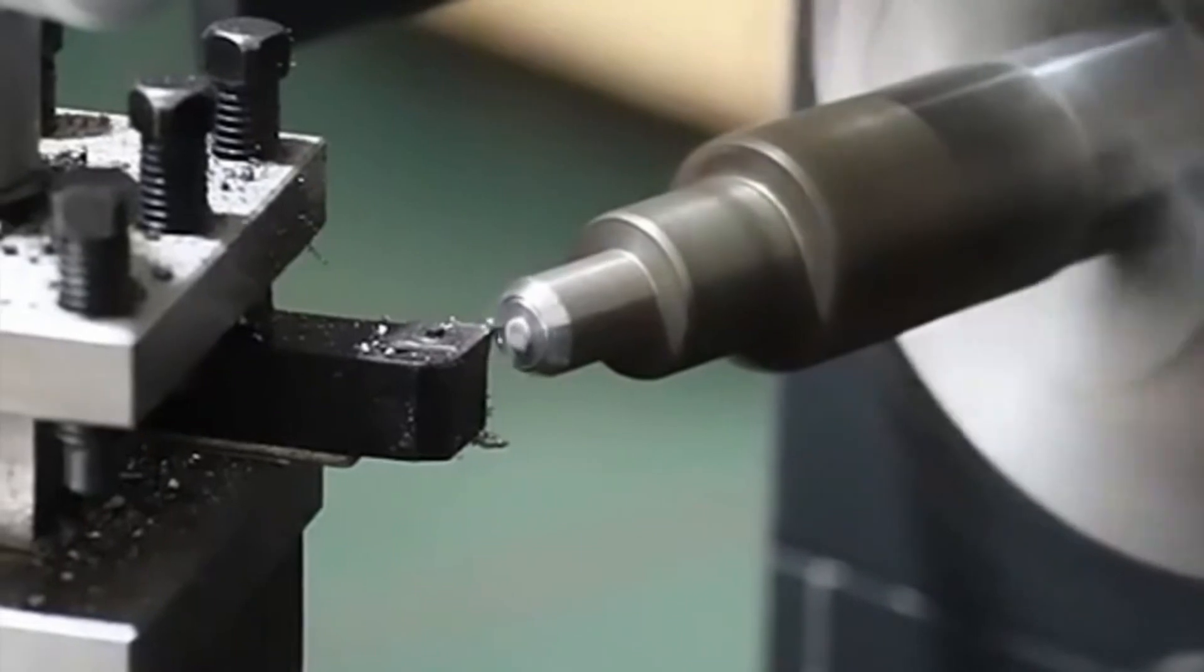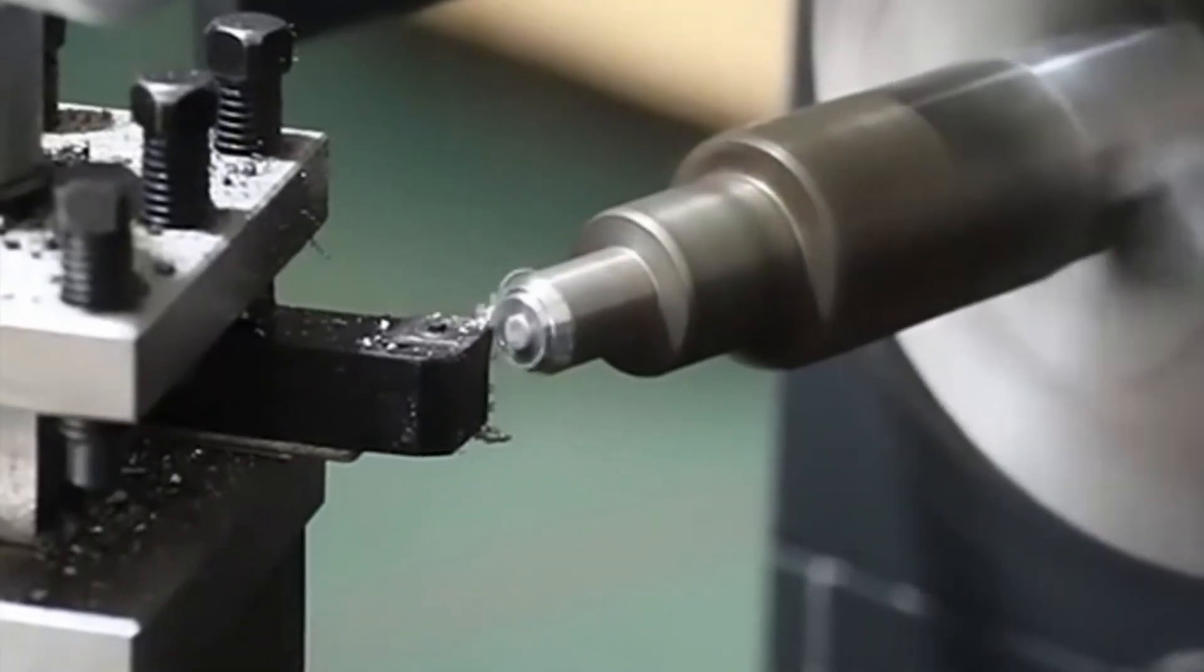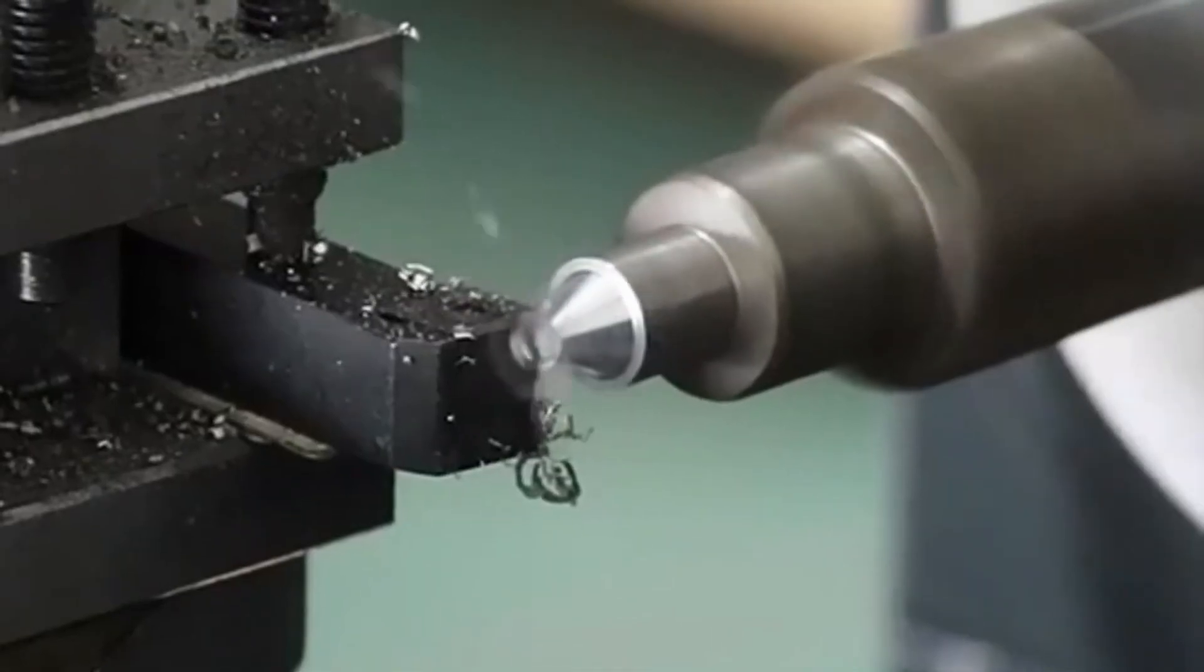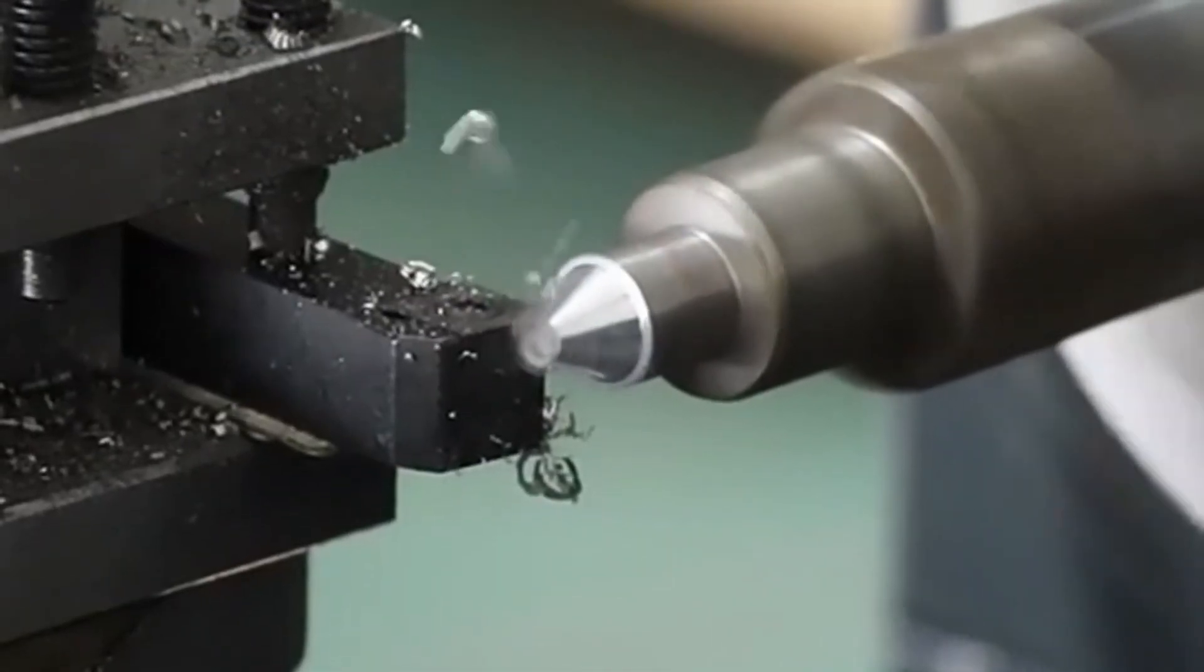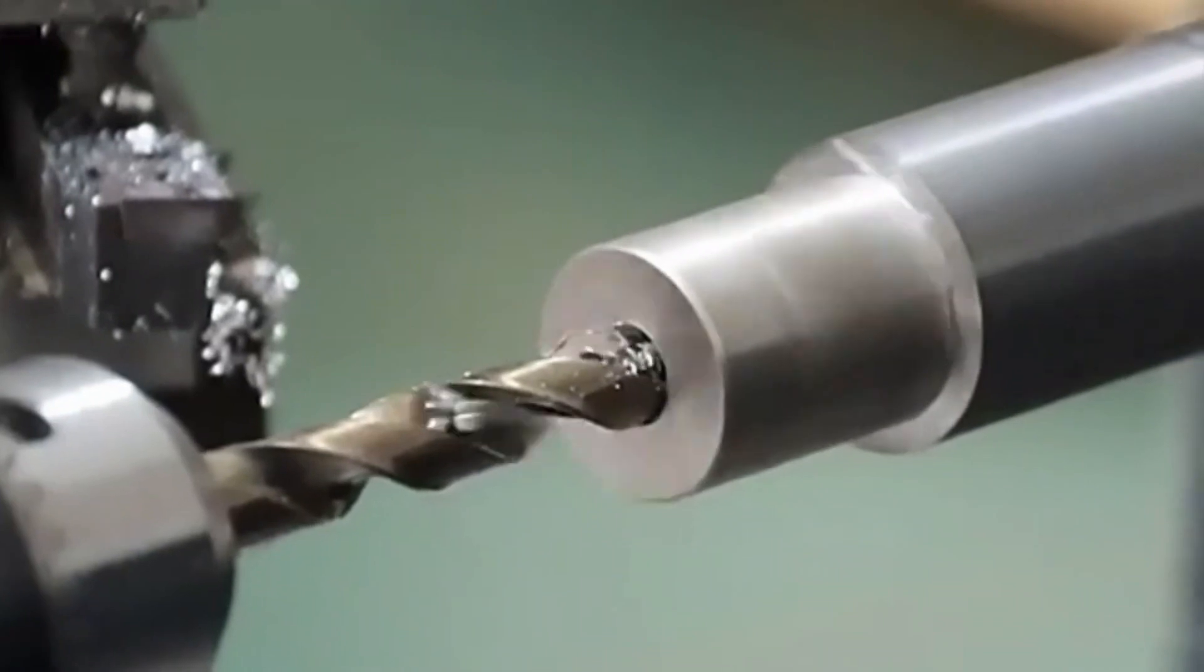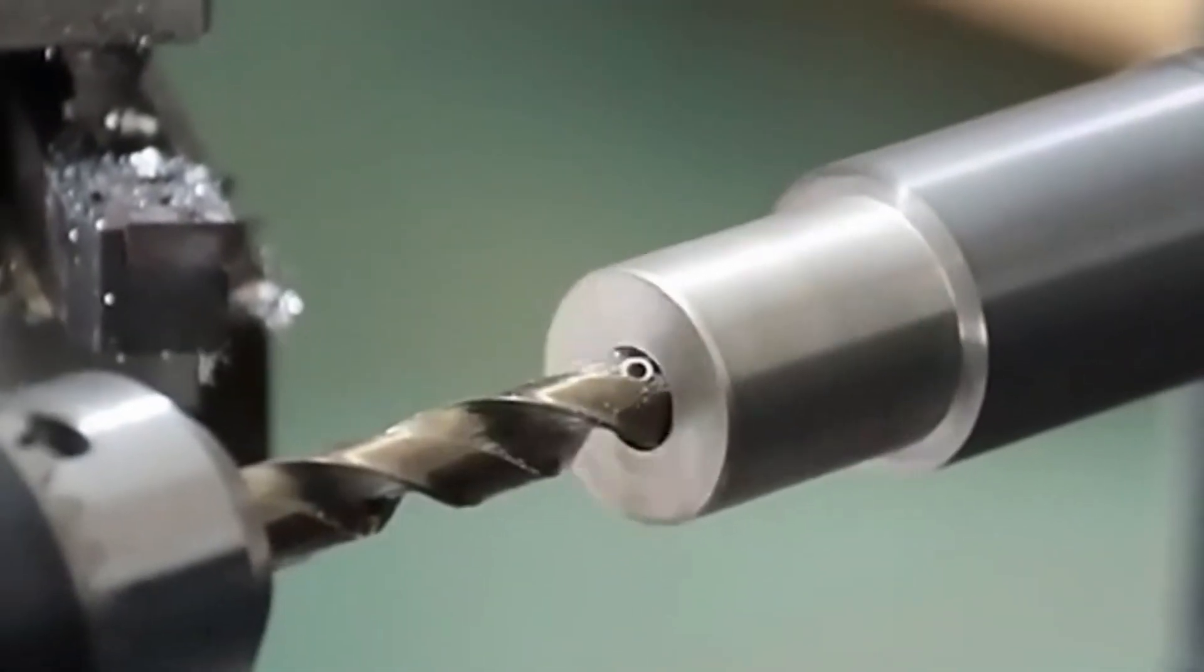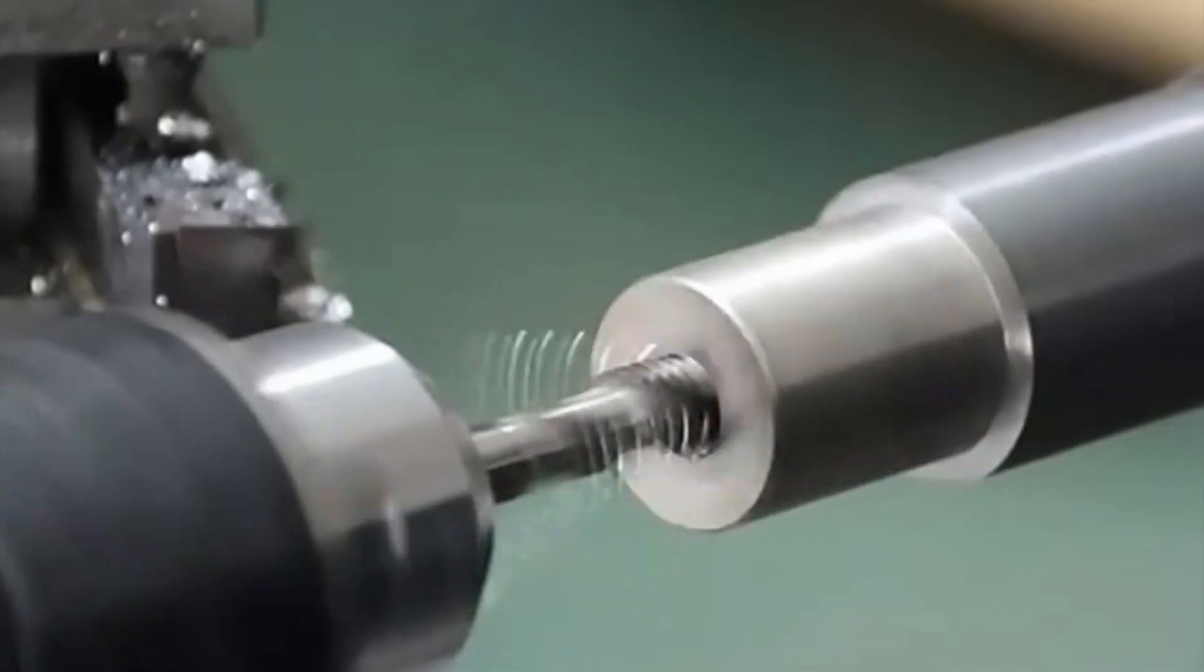The lathe has a spacious workspace with a bed rotation diameter of 300mm, and a distance of 800mm between the two tips, making it suitable for both small-scale and larger projects. The spindle has a 38mm through-hole and an MT5 taper, ensuring compatibility with various tooling options.